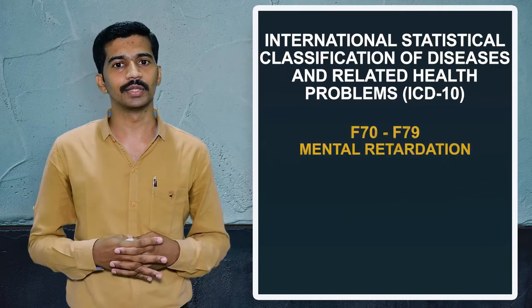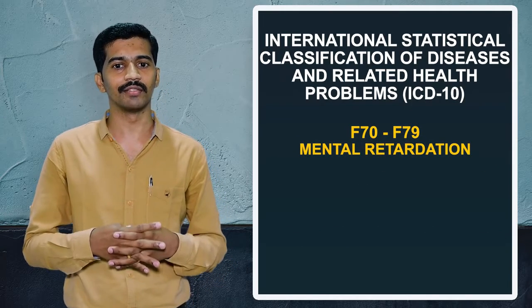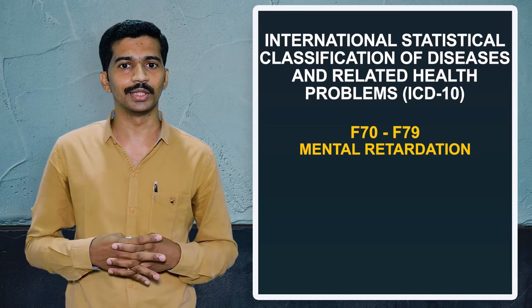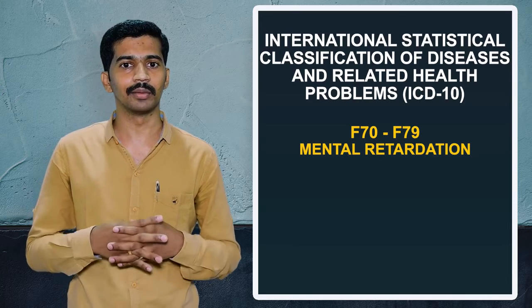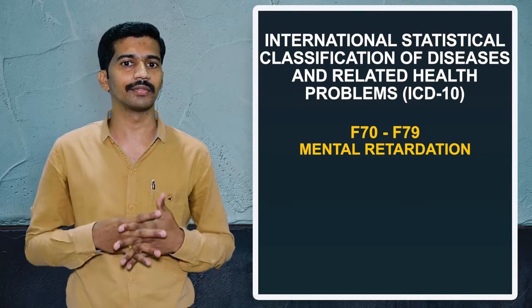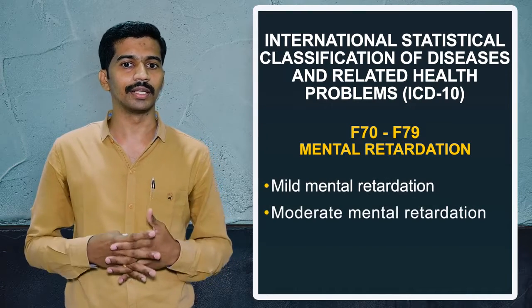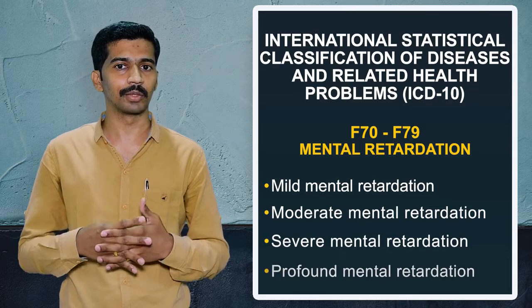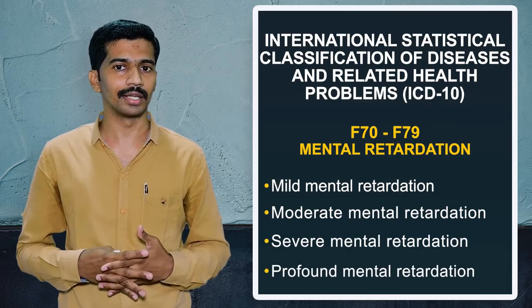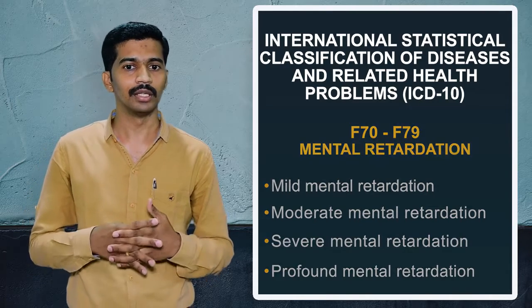The next chapter, F70 to F79, includes content related to mental retardation. Here we can see mild, moderate, severe, and profound mental retardation in this particular chapter.